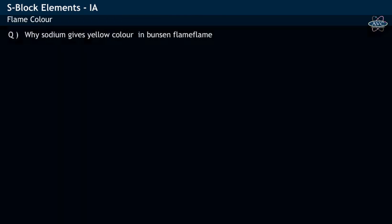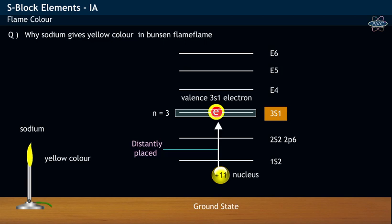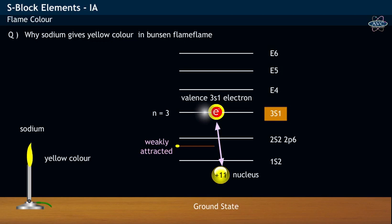Let us explain why sodium gives yellow color in Bunsen flame. In the ground state of sodium, the valence 3s1 electron present in outermost third shell of 3s orbital is far away from the nucleus. As a result of which the valence electron is weakly attracted by the nucleus of sodium.